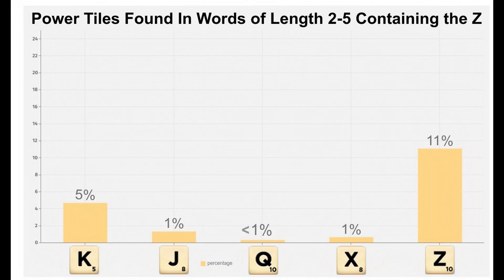The Z doesn't play well with the other power tiles. There are very few words containing both the Z and the J, the Q, or the X. Odds are good if you have these combinations that you'll have to use each of the two one at a time.